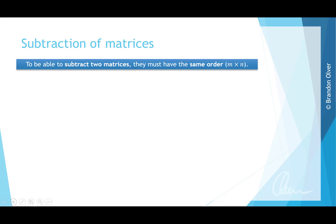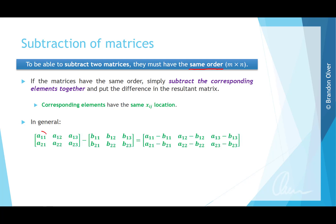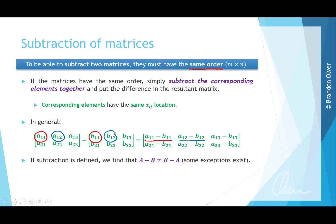To subtract two matrices, they must have the same order — the same criteria as for addition. If the orders match, we subtract the corresponding elements and place the difference in the resultant matrix. In general, A11 minus B11 gives the first entry, A12 minus B12 gives the next, and so on. Note that A subtract B is not equal to B subtract A, with a few exceptions.